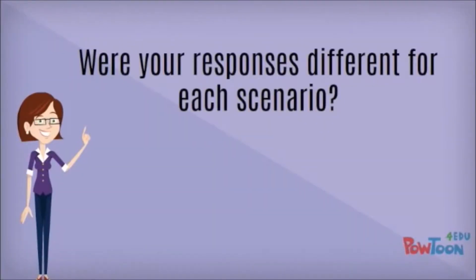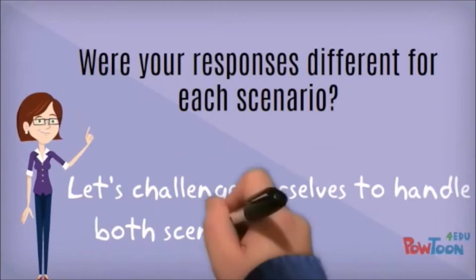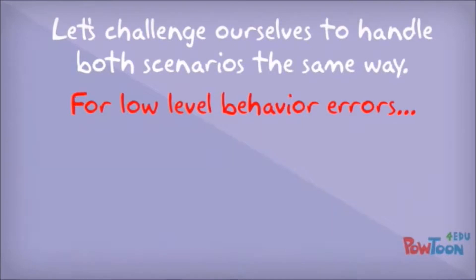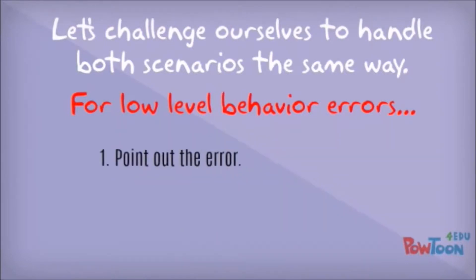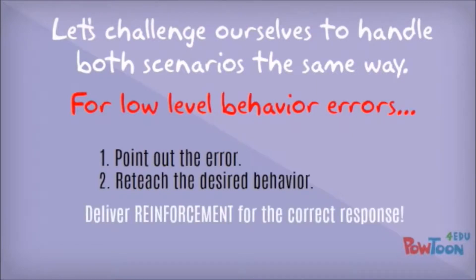A very different response in the second scenario than in the first, but I want to challenge you to think about handling both scenarios the same way. When a student makes a low-level behavior error, rather than no-stop-don't, we approach that error by pointing out the error, reteaching the desired behavior, and then providing acknowledgement when the student is able to engage in the appropriate behavior.